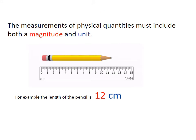When you are taking measurements for physical quantities, you want to ensure that your measurements include both a magnitude as well as a unit. For example, the length of this pencil is 12 cm. 12 would be the magnitude and cm would be the unit.